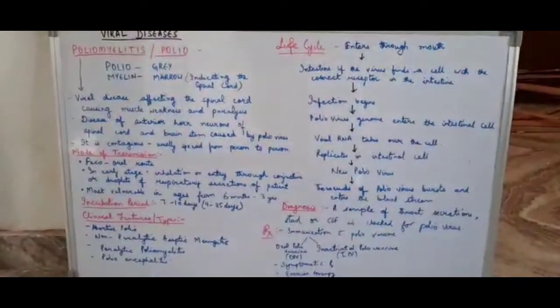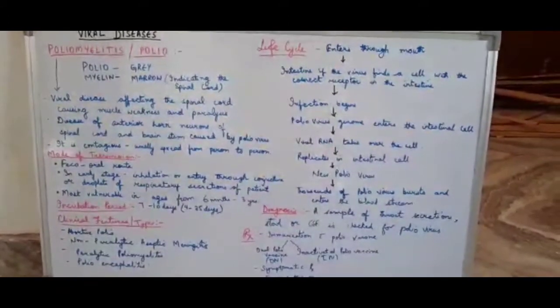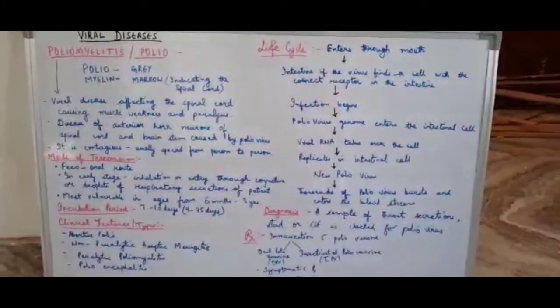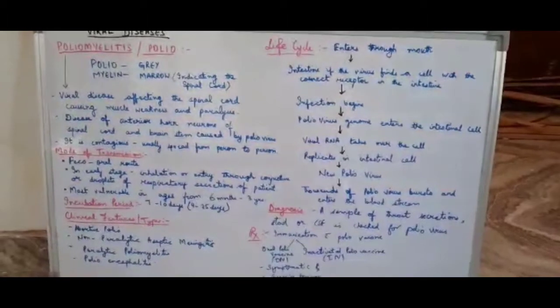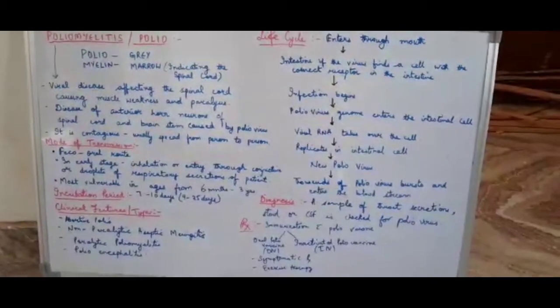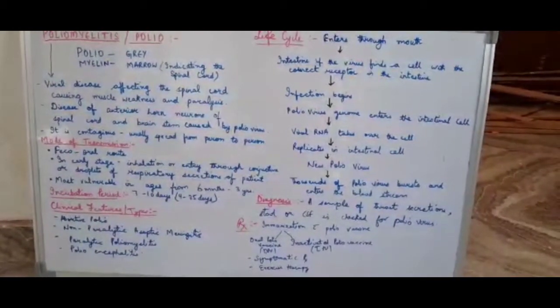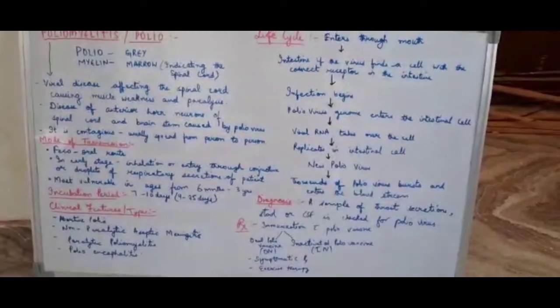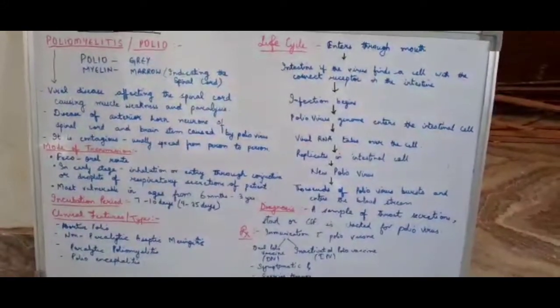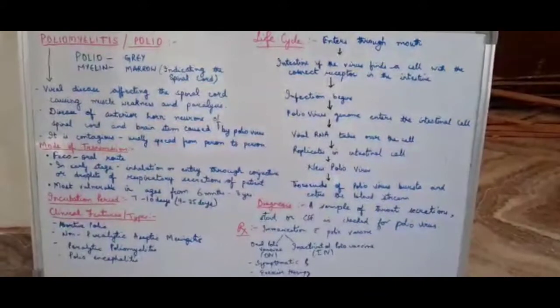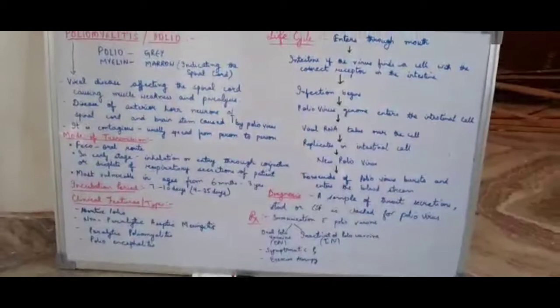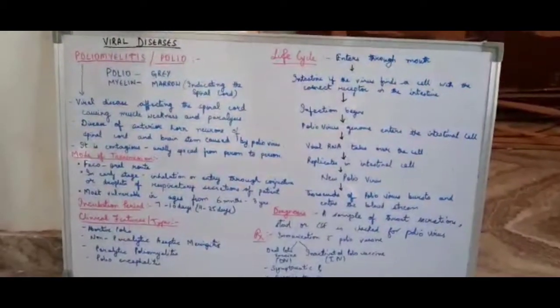When it reaches the intestine tract, the virus replicates in the intestinal cells and new polio viruses are created. Many polio viruses exit the cell and enter into the bloodstream. When you take a blood sample, you will get the viral load of this virus.